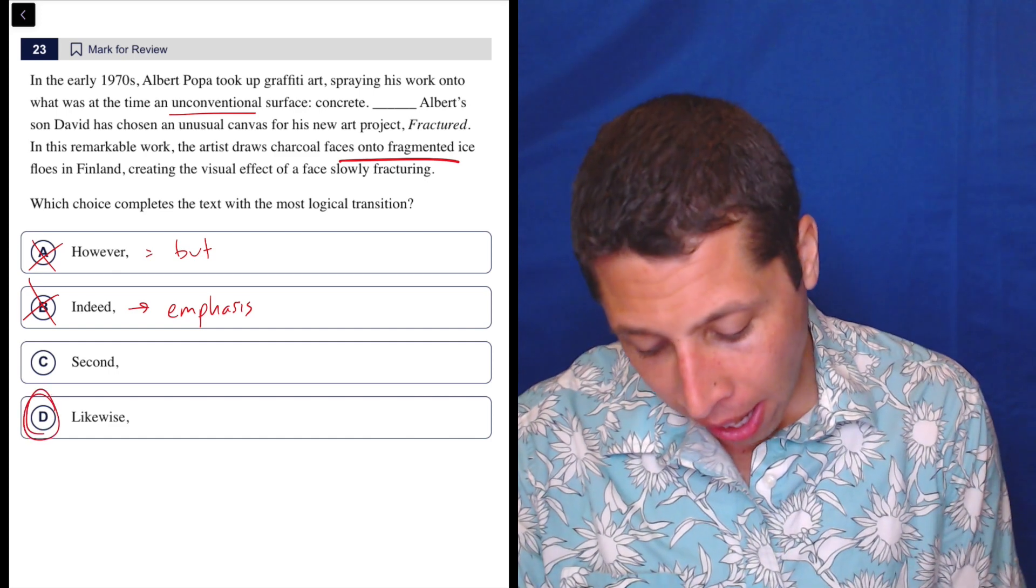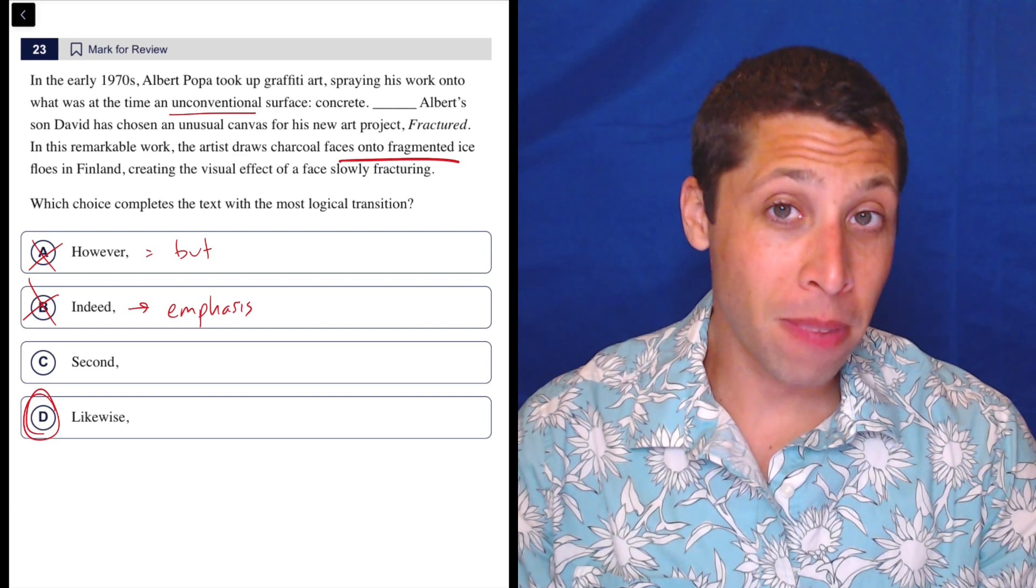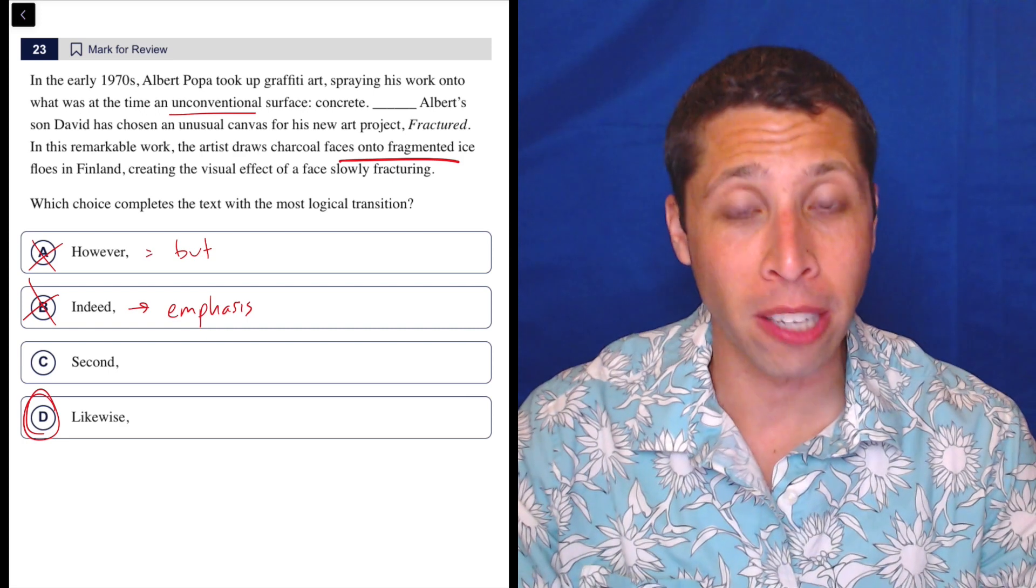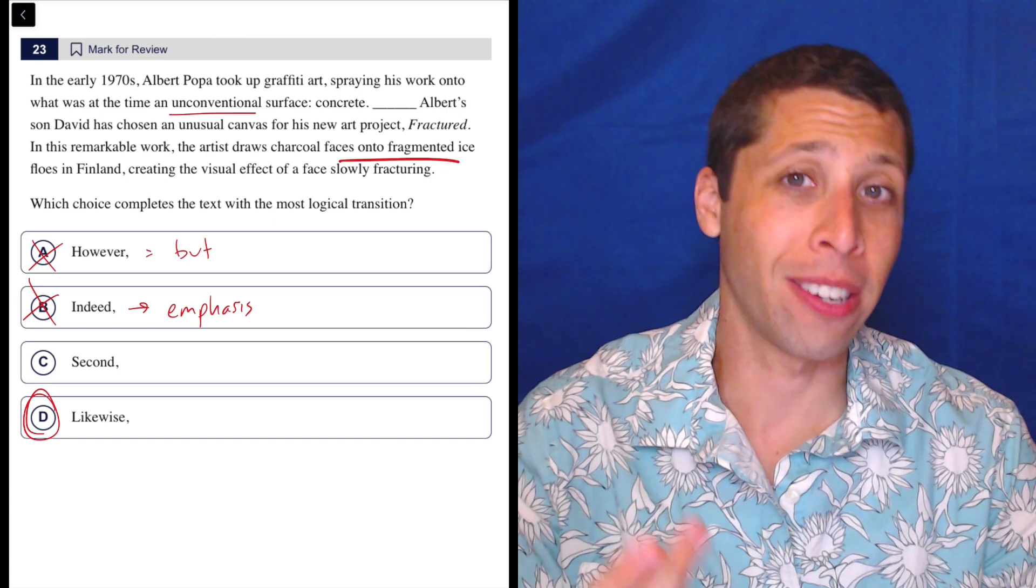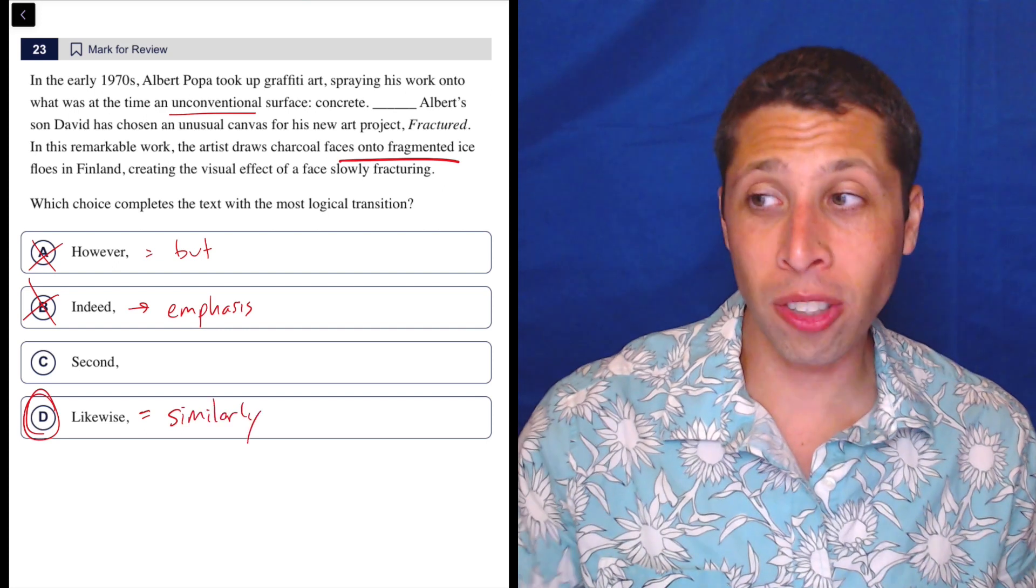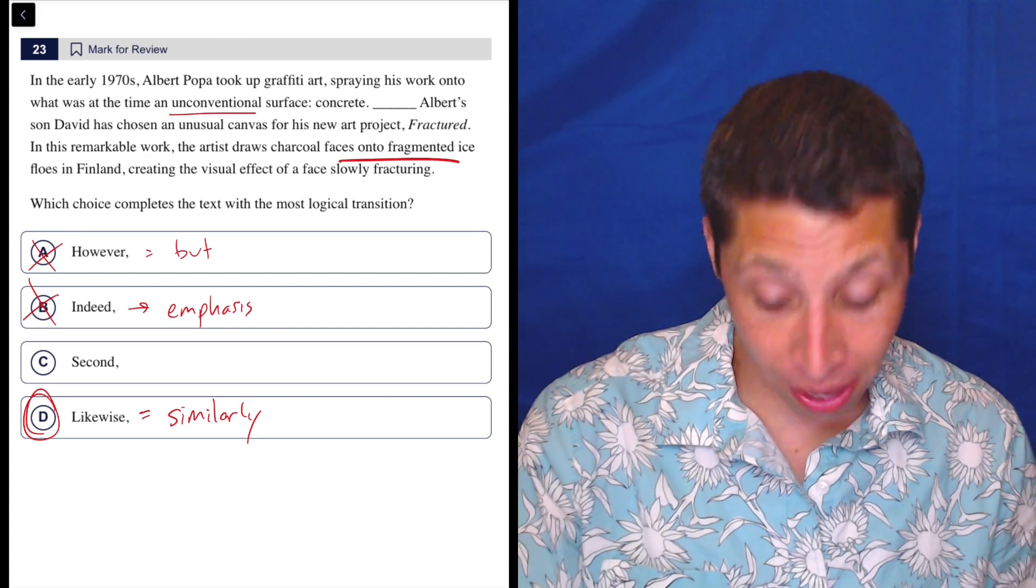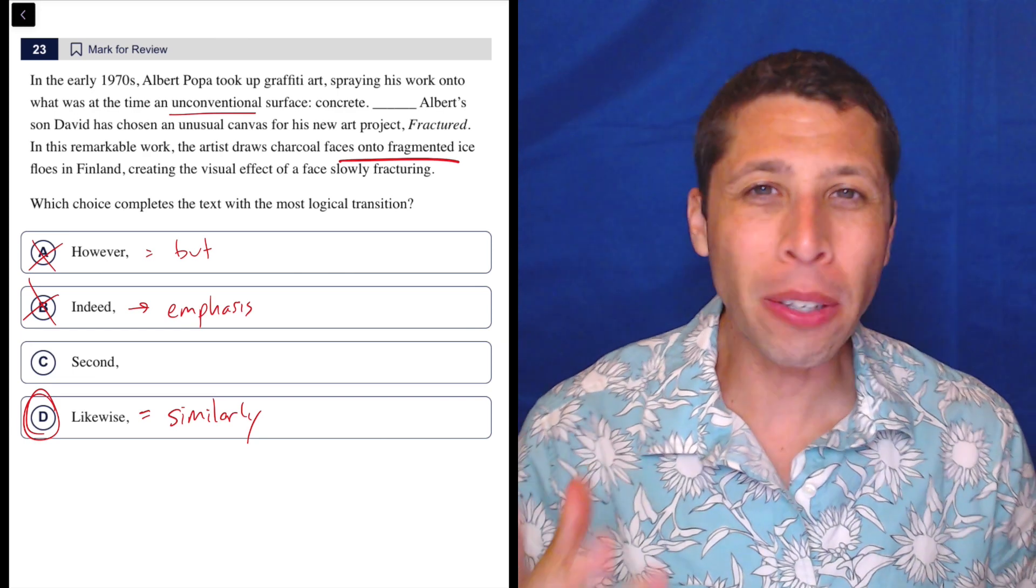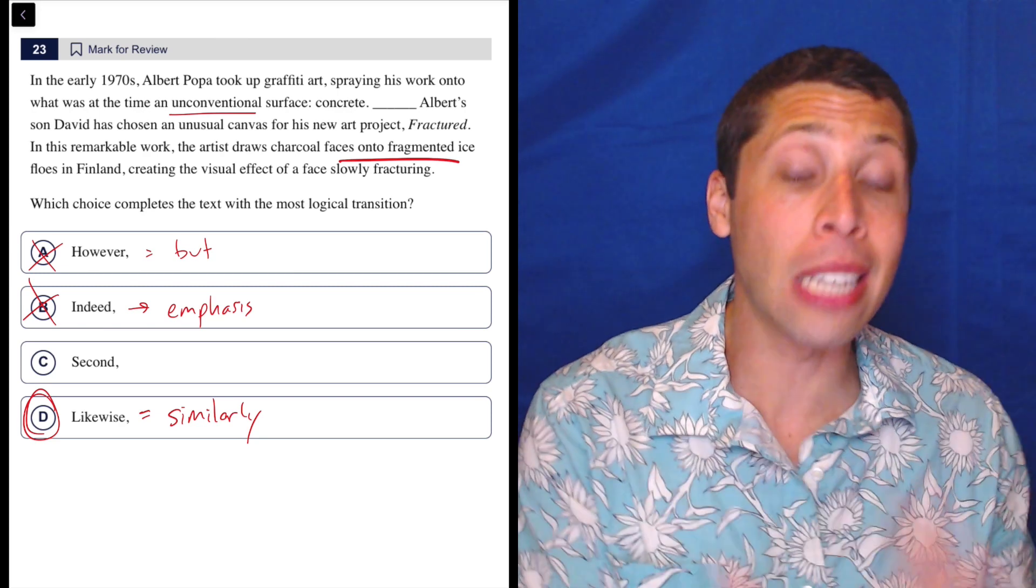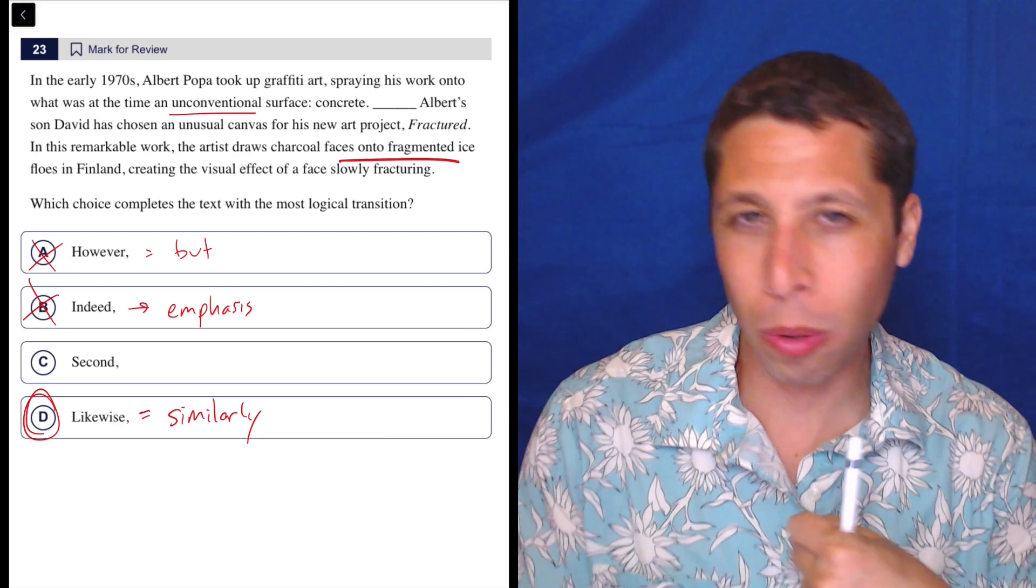But then that leaves us with likewise, which I have said in other videos for this version of the SAT is almost always wrong. And the reason I say that is it's usually a choice, but it is not usually correct. It's just one that sounds kind of smart. So people pick it when they have no idea what's going on in the sentence because they're like, oh, likewise, that's like what smart people say. But likewise is basically just another word for similarly. So it's not that it's always wrong. It's just that very rarely are we actually in a situation where we are trying to say that two things are similar. We are very often in situations where we say that they contrast. So that's why however is a much more common answer. But very rarely we're trying to say that two things are similar. But here that's exactly what's happening. The father is drawing on unconventional surfaces. Similarly, the son is also drawing on unconventional surfaces. I think it's a hard question. I think it's hard because we have to pick a weird answer. I think it's hard because the connection between the two sentences is not obvious.